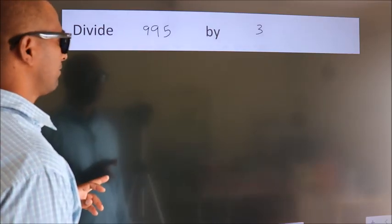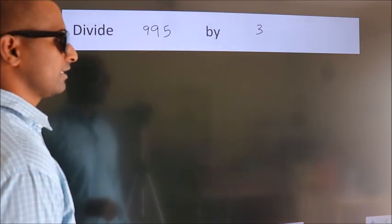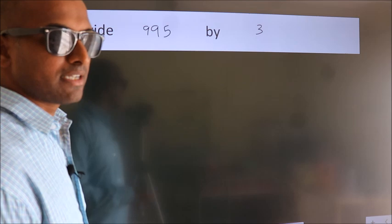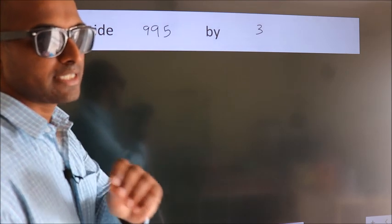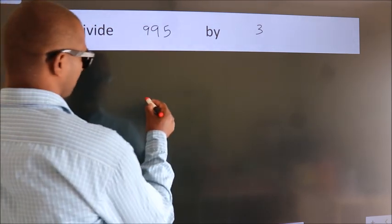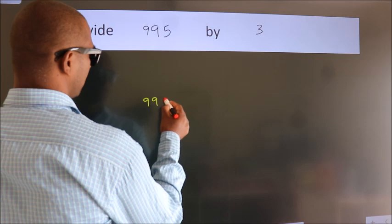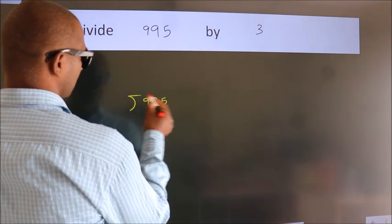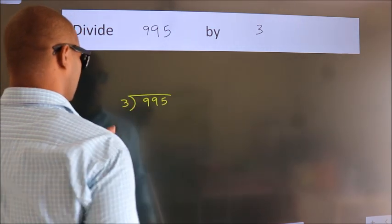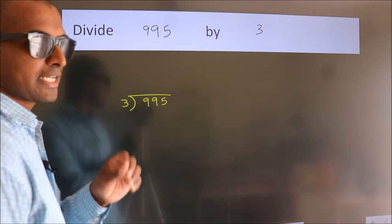Divide 995 by 3. To do this division, we should frame it in this way. 995 here, 3 here. This is your step 1.